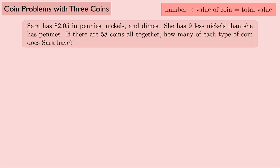Sarah has $2.05 in pennies, nickels, and dimes. She has nine less nickels than she has pennies. If there are 58 coins altogether, how many of each type of coin does Sarah have?